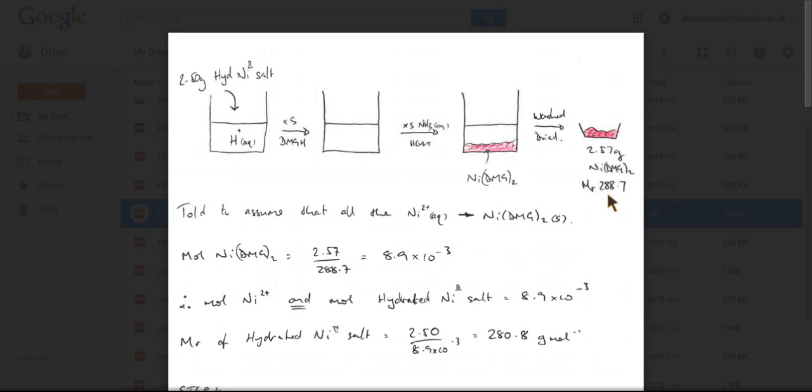And that is actually something you're going to need to do anyway. We were also told to assume that all of the nickel 2 plus ions are converted to NIDMG twice. And so the moles of NIDMG twice in here are actually the same as the moles of the hydrated nickel 2 salt.